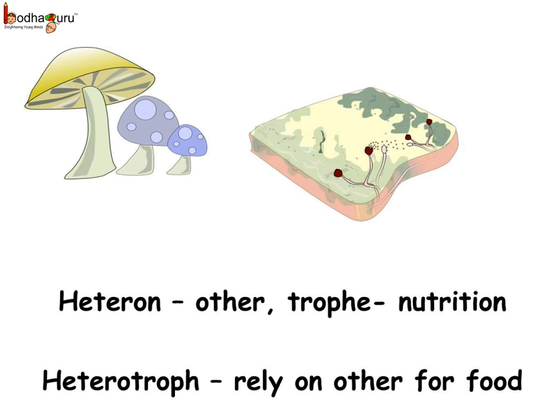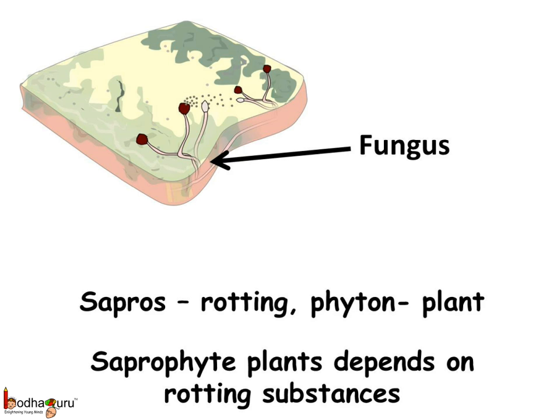Many plants also depend on other organisms for food nutrients. This is Heterotrophic Nutrition — 'hetero' means other and 'troph' means nutrition. So the organisms which have heterotrophic nutrition are called heterotrophs. Many heterotrophs, like the fungus, take nutrients from rotting substances. This is called Saprophytic Nutrition — 'sapro' means rotting and 'phyton' means plant, so a fungus is a saprotroph.